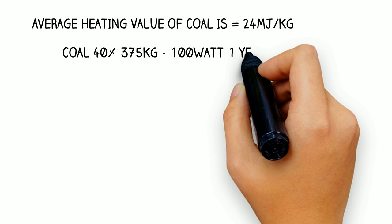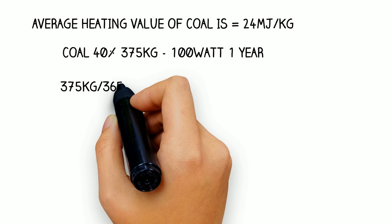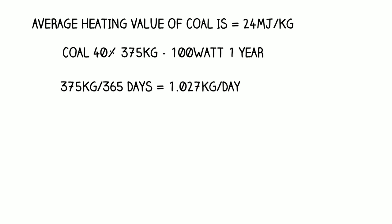Assuming a coal-fired power station runs at 40% efficiency, it will require 375 kilograms to power up a 100-watt light bulb for one year.